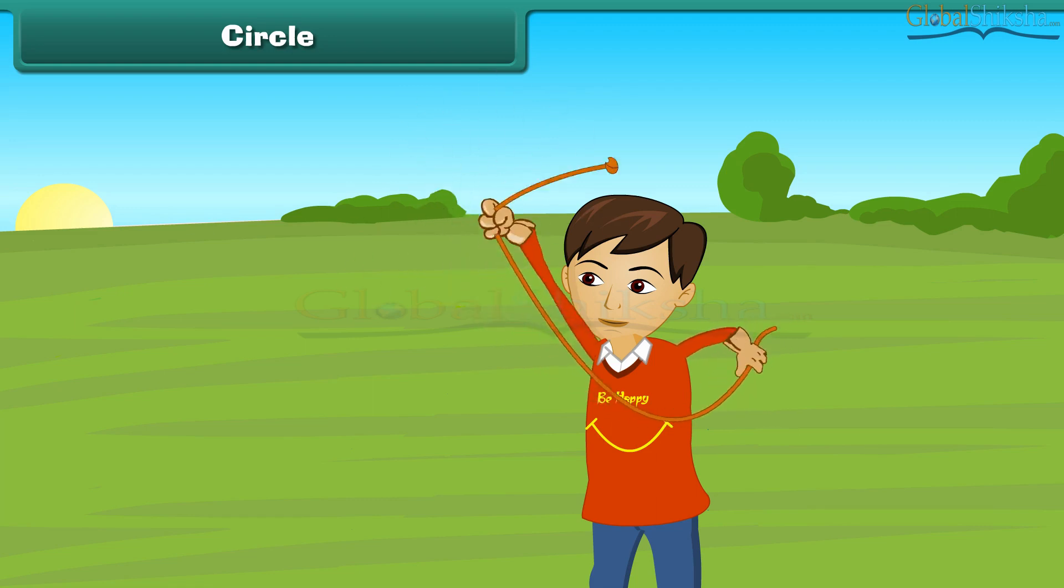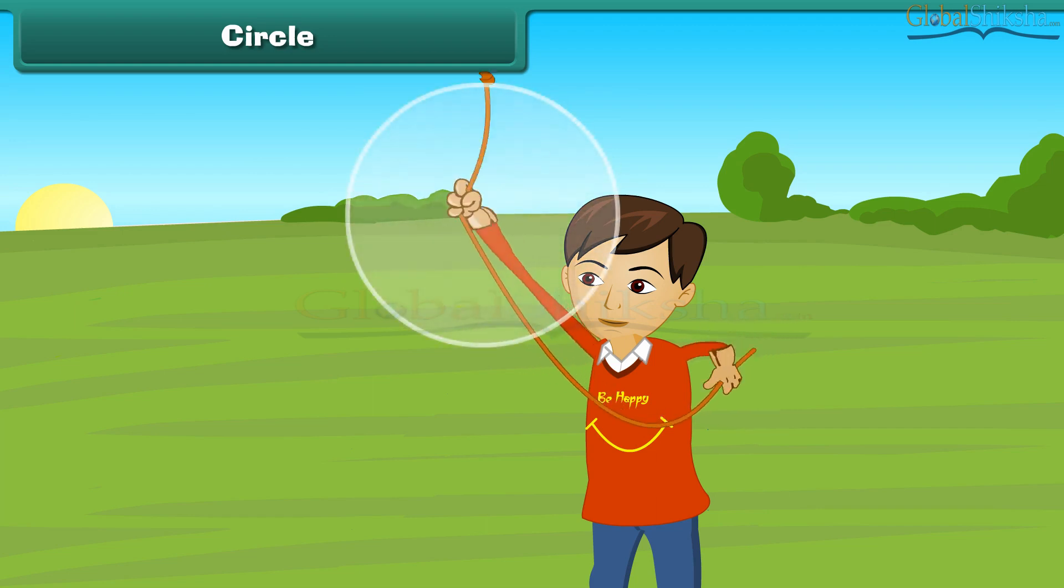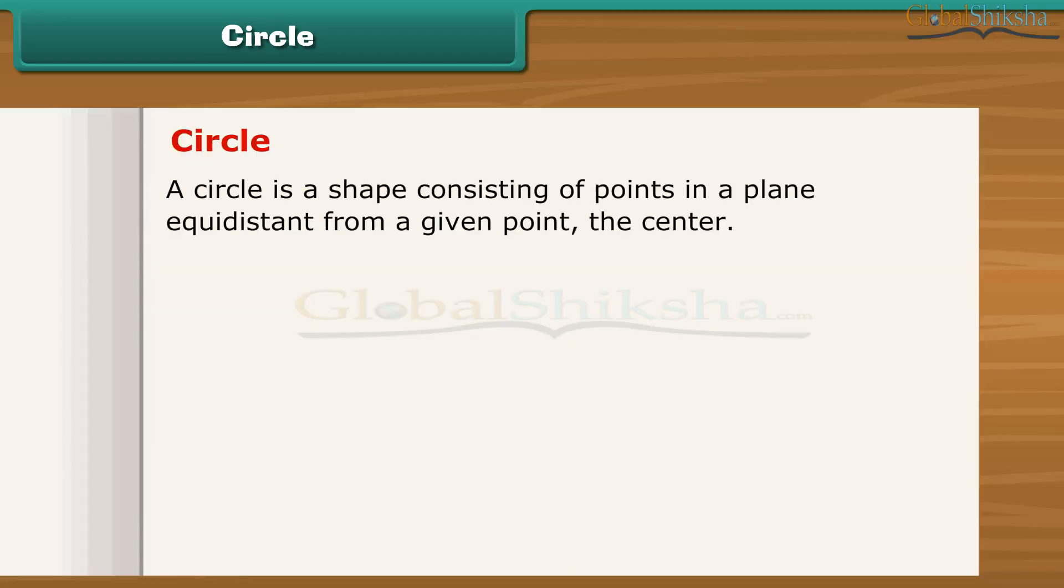Look what Sahil is doing. He is rotating a rope in the air. What shape is the knot at the end of the rope forming? It is a circle. A circle is a shape consisting of points in a plane equidistant from a given point, the center.